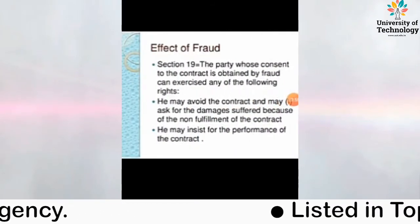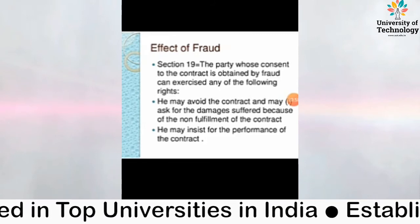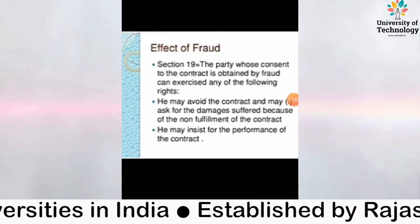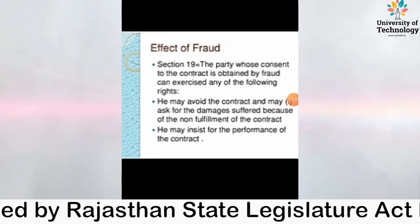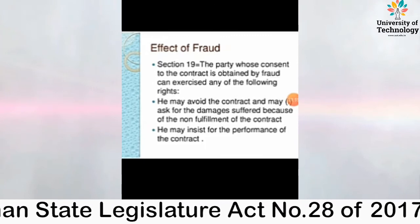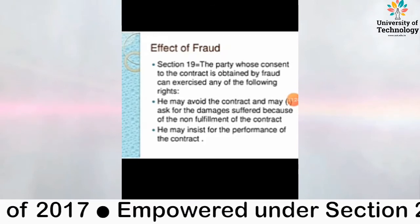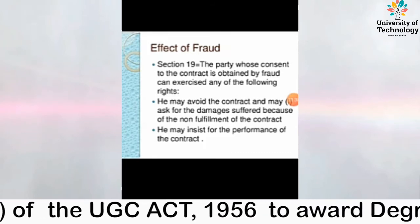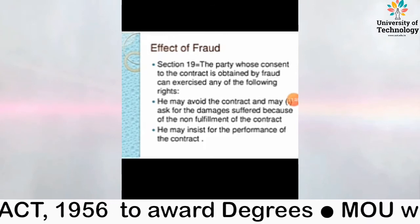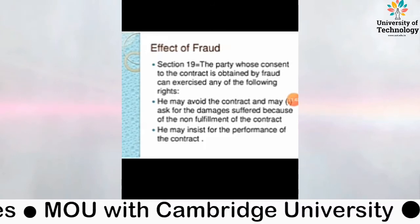Effect of Fraud — Section 19: The party whose consent to the contract is obtained by fraud can exercise any of the following rights: he may avoid the contract and may ask for damages suffered because of the non-fulfillment of the contract; or he may insist for the performance of the contract. Aggrieved party दो काम कर सकती है — contract avoid कर सकती है और damages की क्षतिपूर्ति के लिए court जा सकती है, या contract की performance पर insist कर सकती है।